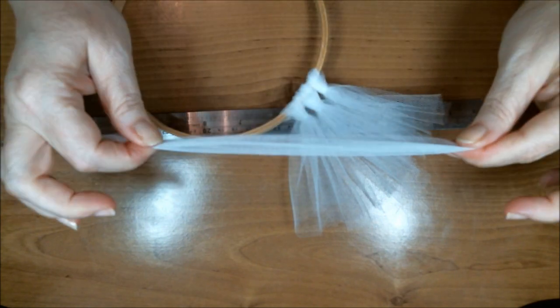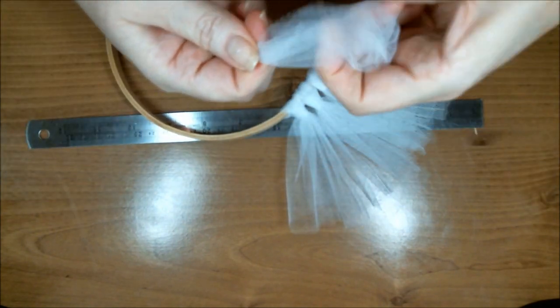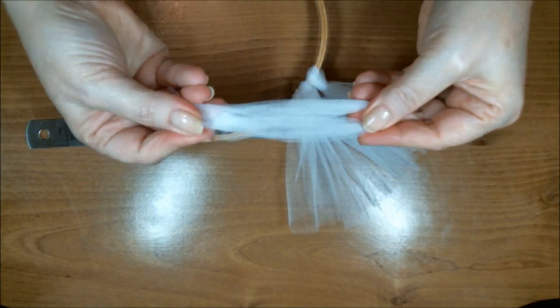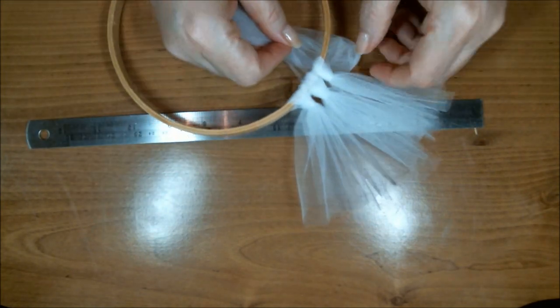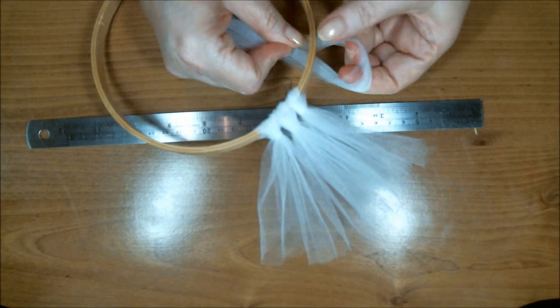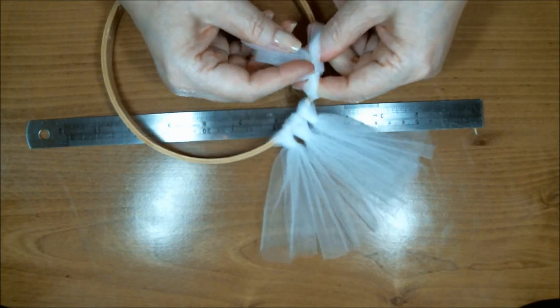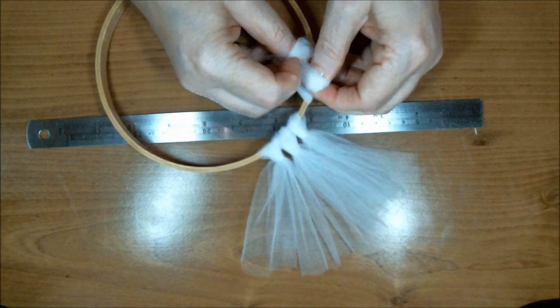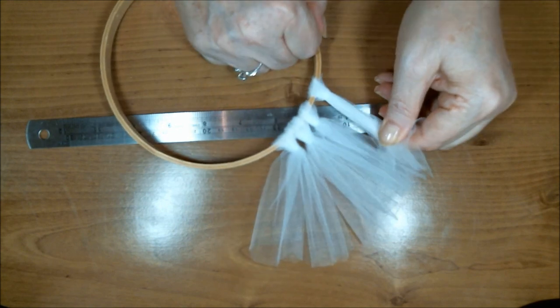So I'll show you one more time. Taking your tulle, folding it in half, going underneath like that. There's your open hole. And you're going to pull it through, bring that down, and tighten.